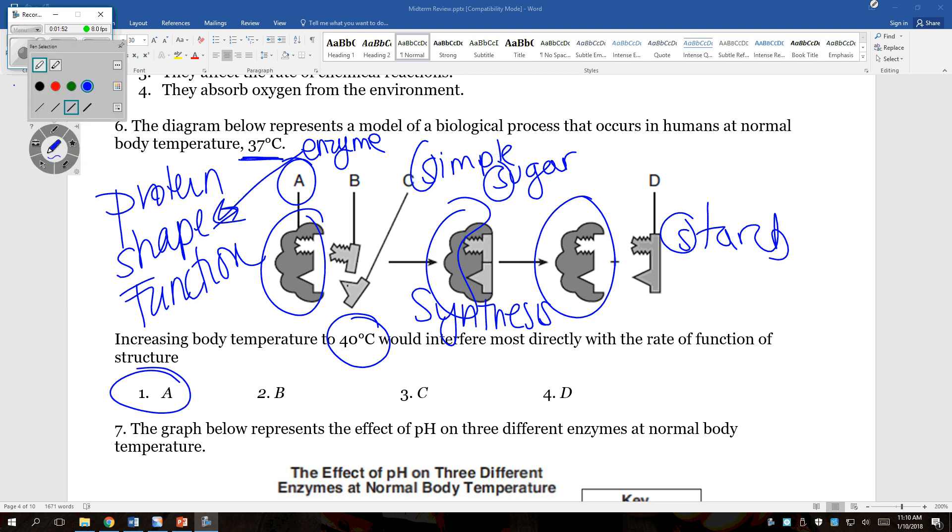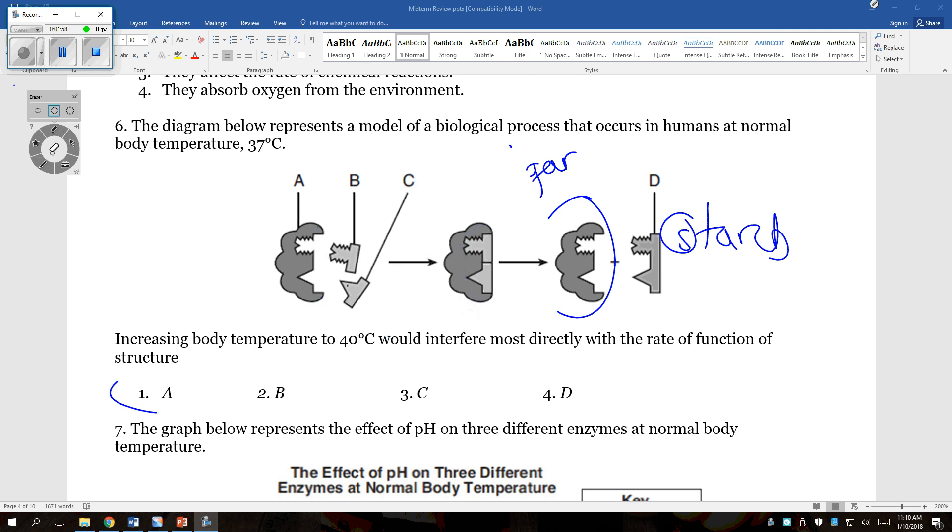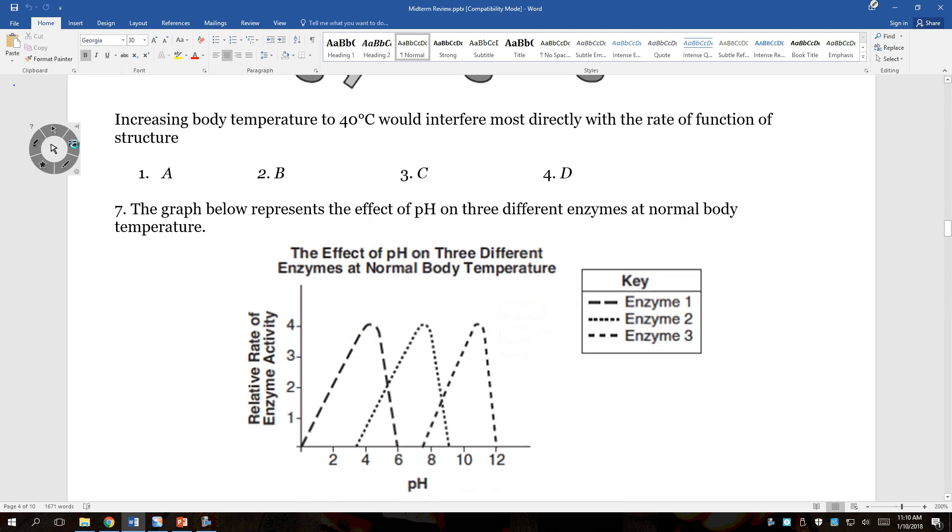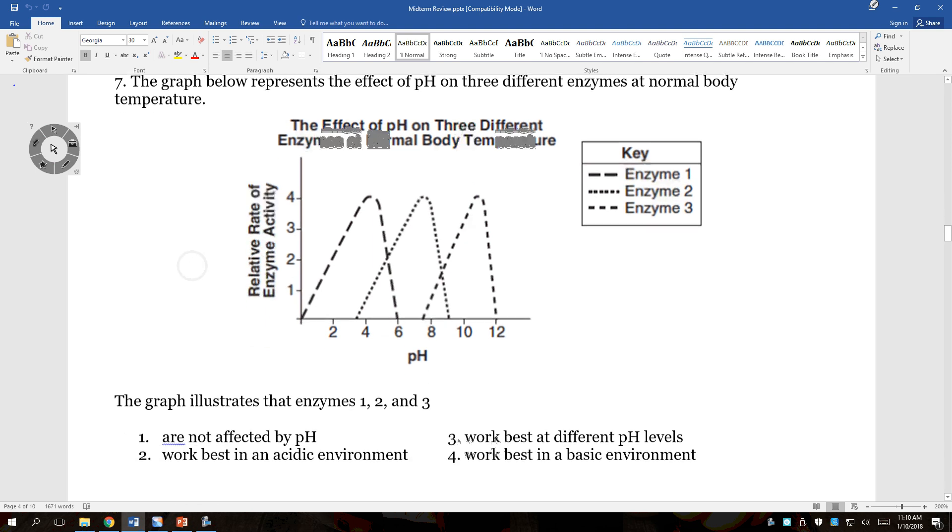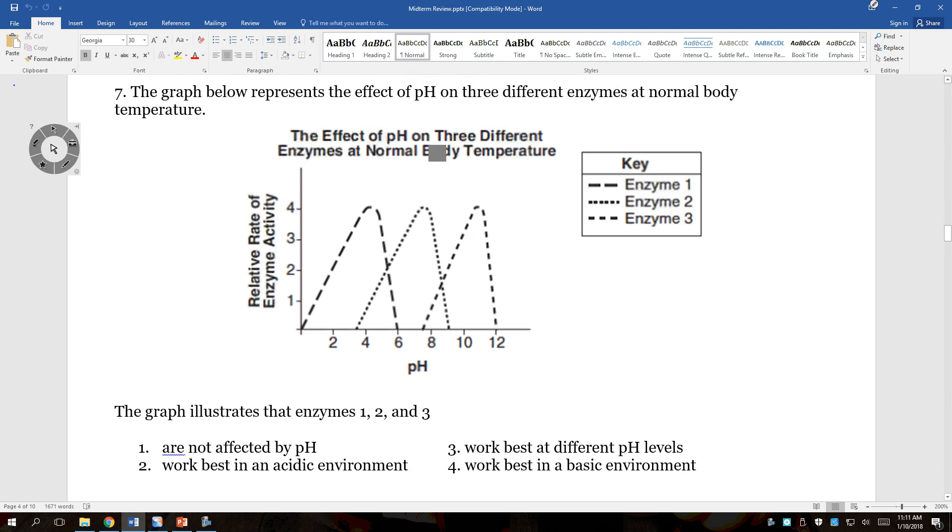Continuing on, if we look at number seven, what you're going to see is a graph, much like the graphs that we looked at earlier in the year. It says, the temperature below represents the effect of pH on three different enzymes at normal body temperature. The graph illustrates that enzymes one, two, and three.